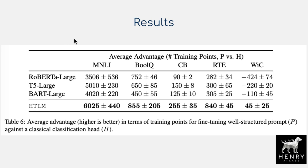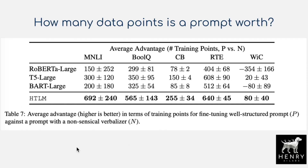There's another paper titled 'How Many Data Points Is a Prompt Worth?' that looks at how much fine-tuning computation you save by having these prompts — how much additional data you avoid needing to collect to reach the same performance, given the inductive bias of a good prompt. With better prompts from HTML tags, there's a huge advantage in data efficiency comparing this hypertext model with RoBERTa, T5, and BART Large, even without a verbalizer — that is, without a mapping from the language model vocabulary into the downstream classification task.